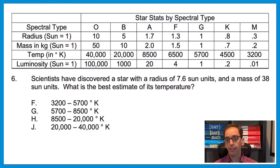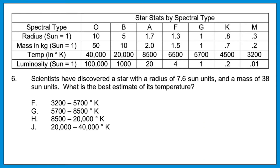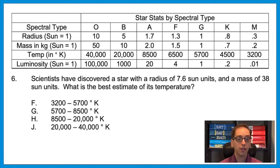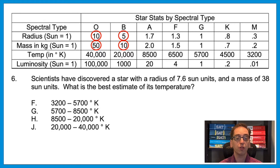Question six: Scientists have discovered a star with a radius of 7.6 sun units and a mass of 38 sun units. What is the best estimate of its temperature? A radius of 7.6 falls right between 10 and 5 — those first two columns. A mass of 38 falls right between 50 and 10, also between those first two columns. That means the star lives somewhere between spectral types O and B, so its temperature would also fall in that range: between 40,000 and 20,000. The answer is J. You are allowed to interpret data between two points on a graph.